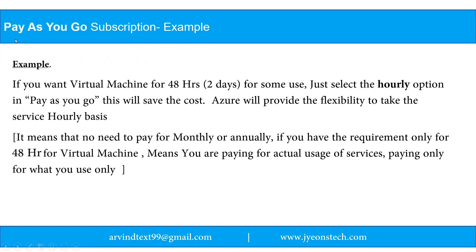Let's understand Pay As You Go with an example. If you want a virtual machine for 48 hours — that is two days — just select the hourly option in Pay As You Go. This will save cost. Azure provides the flexibility to take services on an hourly basis, so there's no need to pay monthly or annually if your requirement is only 48 hours. You are paying for actual usage only.